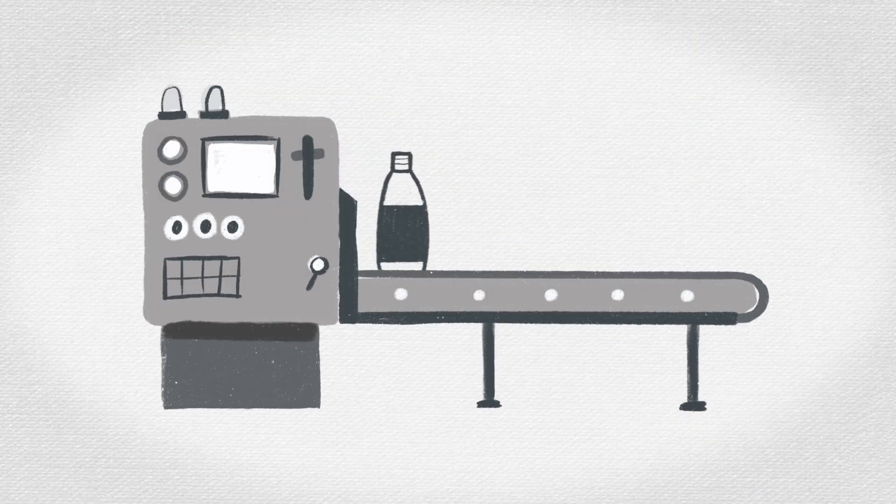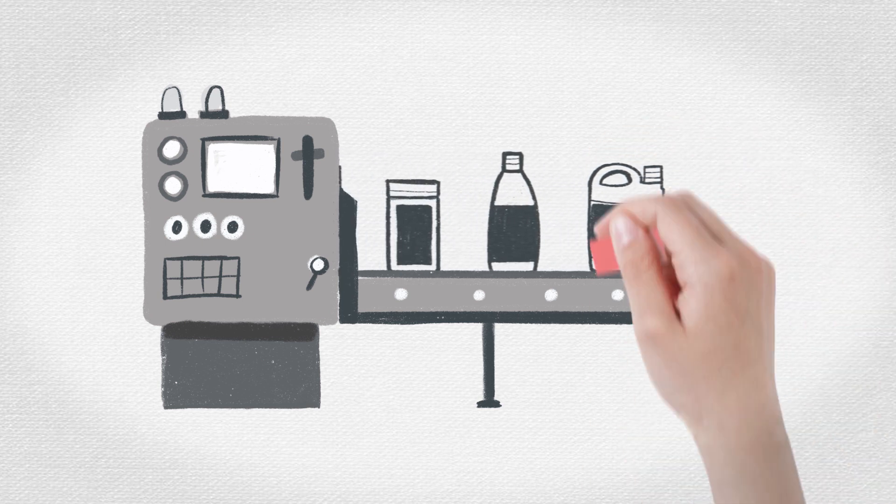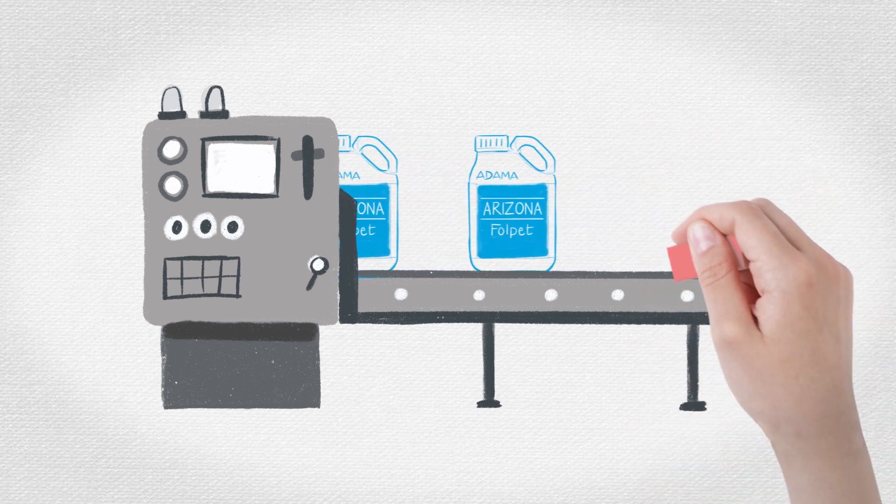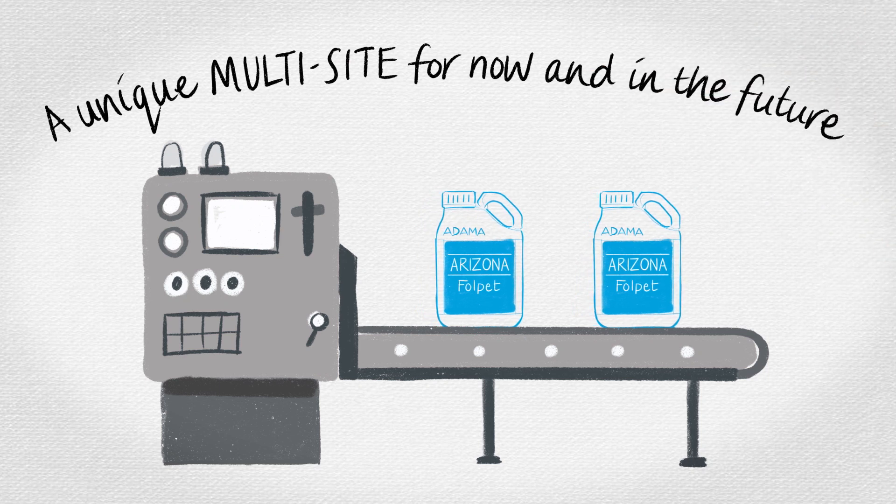With limited new chemistries being developed and increasing regulatory pressures removing others from the market, Arizona is a unique multi-site protectant fungicide containing straight folpet at 500 grams per litre and is now the first choice multi-site fungicide for cereals.